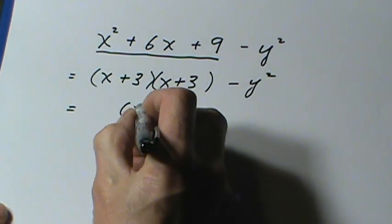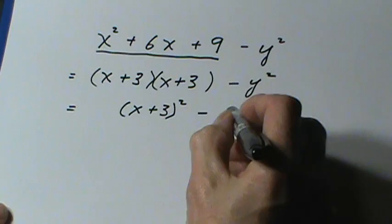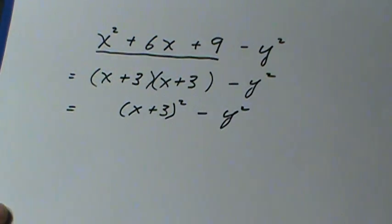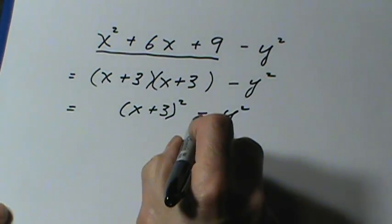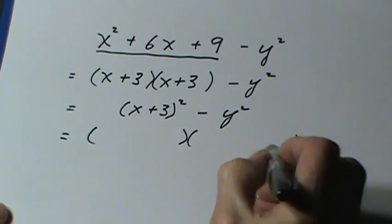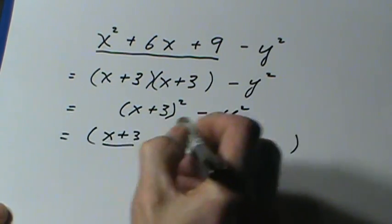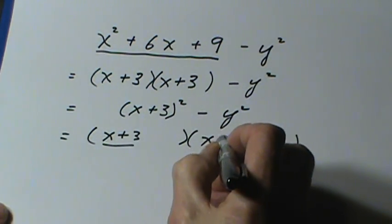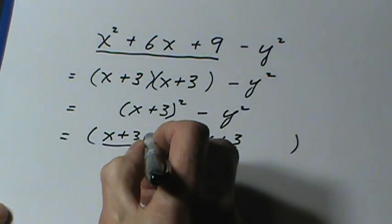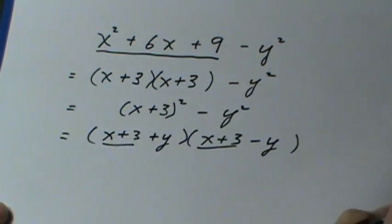Now this can be written as x plus 3 squared. So we're back to what we started out talking about. That's the difference of perfect squares. And I'm going to set this up thinking of the x plus 3 as a unit at the front of each bracket. And then I have the plus y and the minus y to complete that.